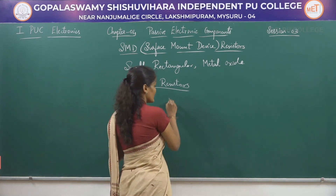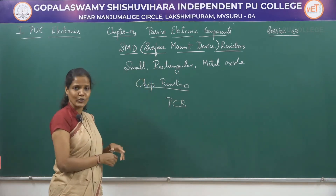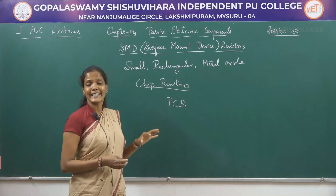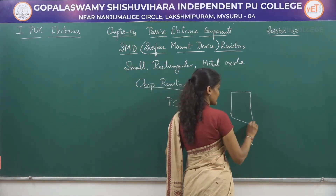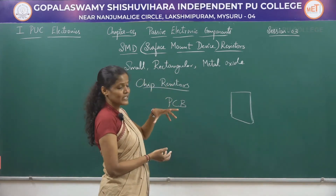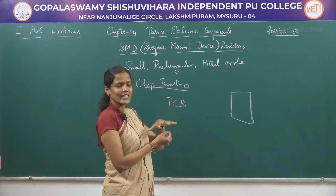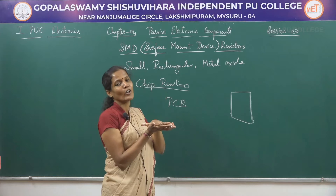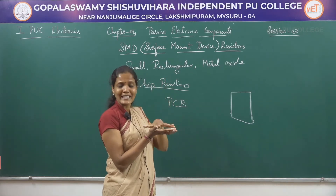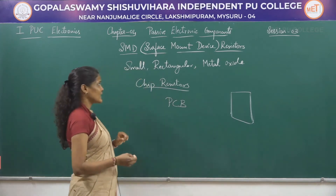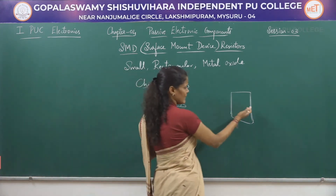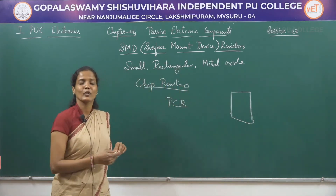A PCB board — printed circuit board — is where we place a number of ICs to perform a particular function. These chip resistors or SMD resistors are rectangular in shape. On either side they have metal caps with small pins that can be easily placed and soldered on the PCB board.